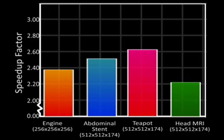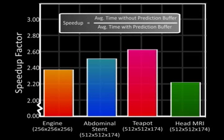Here, we see a histogram showing what speedup is achieved when rendering various datasets. Note that we defined speedup as the average time taken in the rendering kernel without using the prediction buffer, divided by the average time when using the buffer.